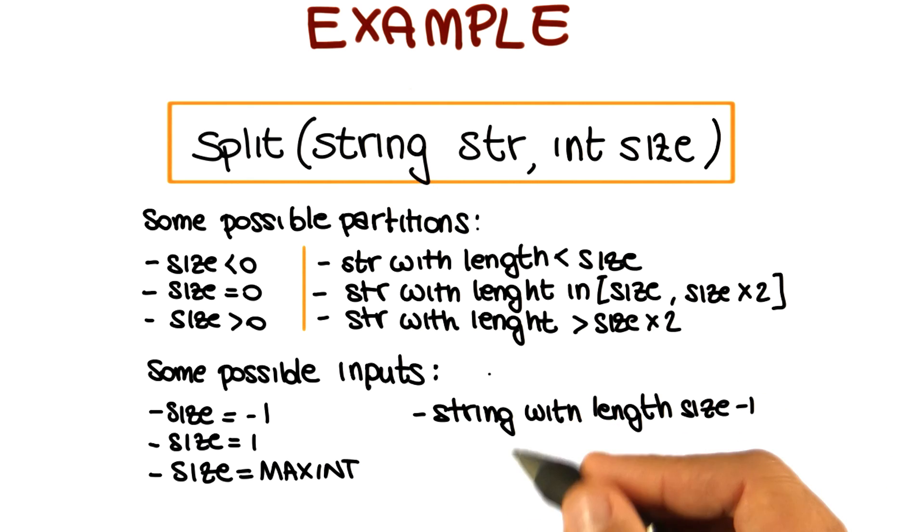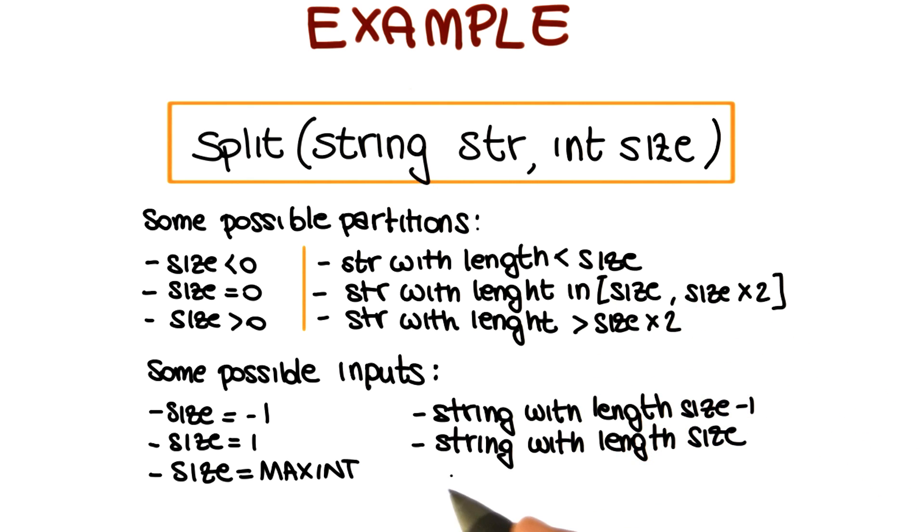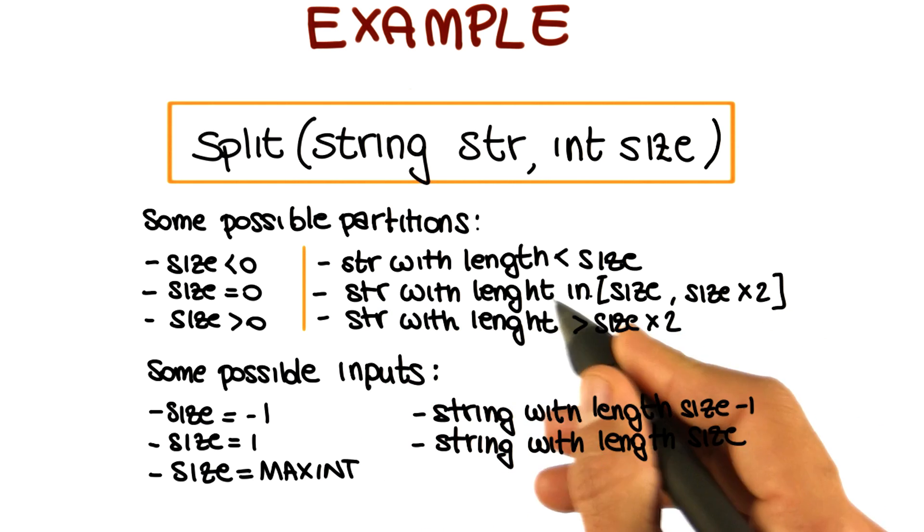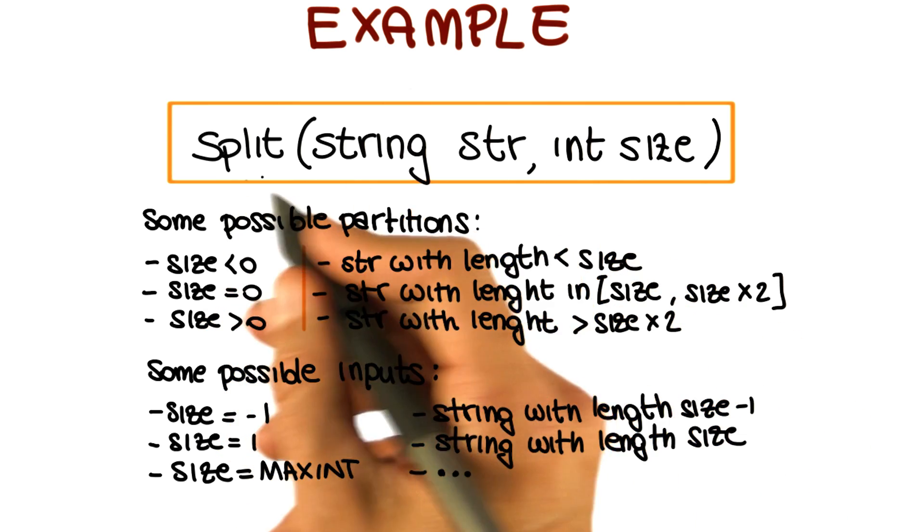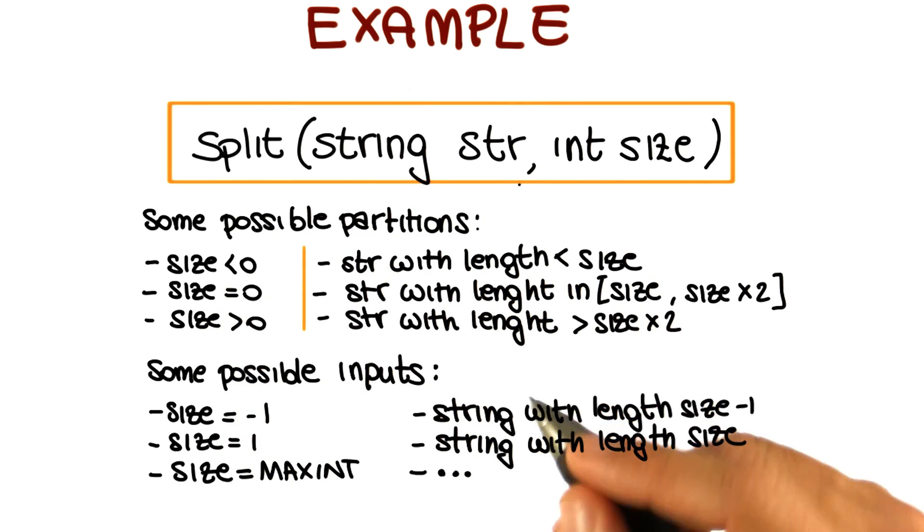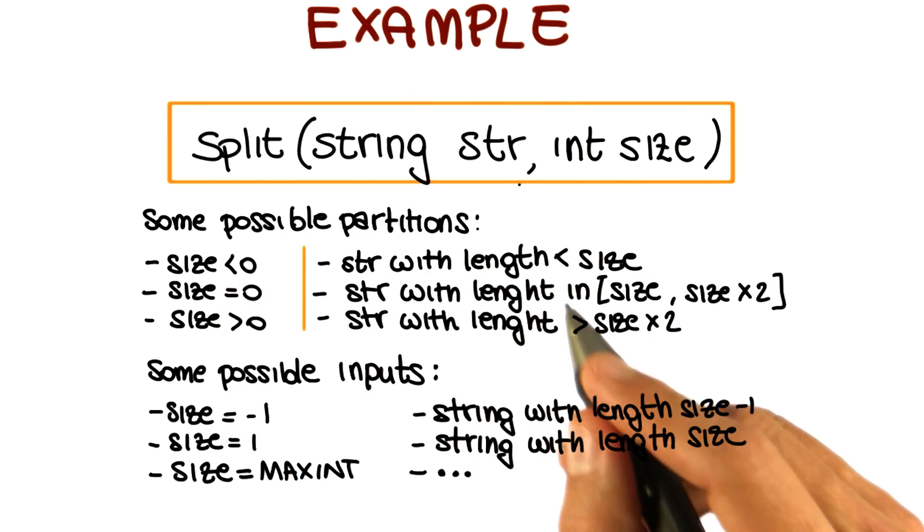And we could continue in this way, like for example, selecting a string whose length is exactly size as a boundary value for this other domain, and so on. And we will get back actually to this example and look at it in a more extensive way when we talk about the specific method for doing this kind of process.